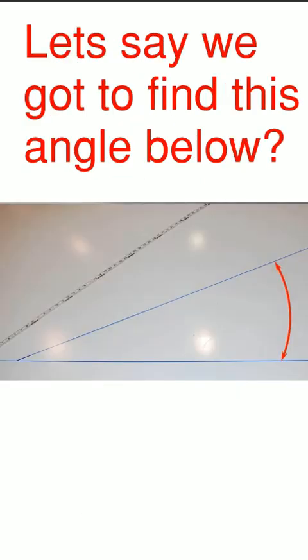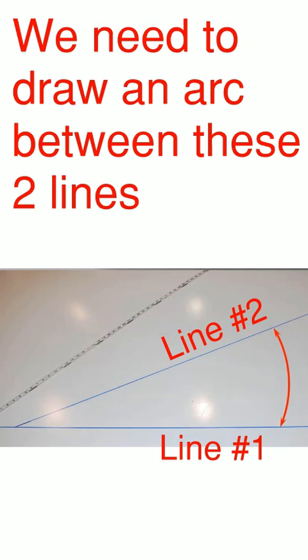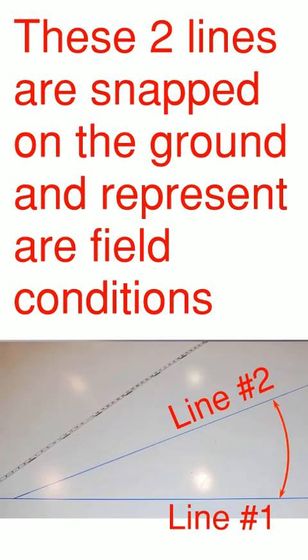Let's say we got to find this angle below as an example. We need to draw an arc between these two lines. These two lines are snapped on the ground and they would represent our field conditions.